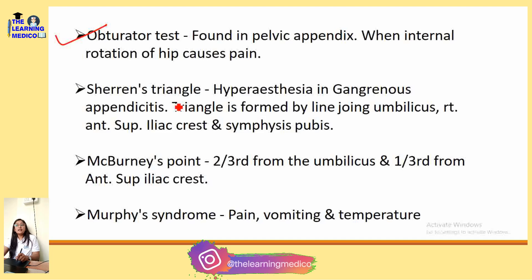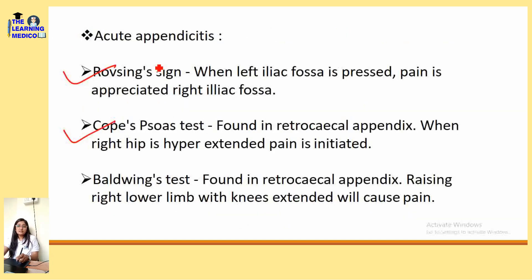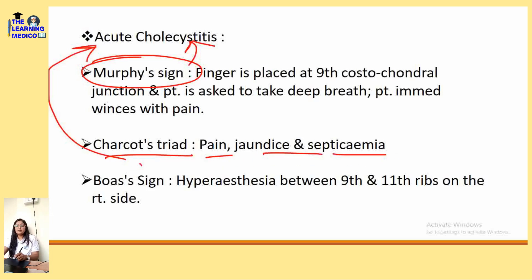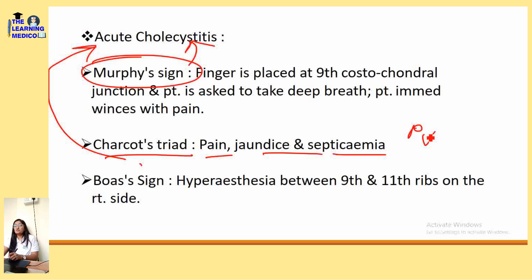McBurney's point is two-thirds from the umbilicus and one-third from the anterior superior iliac spine. Murphy's syndrome is pain, vomiting and temperature — seen in acute appendicitis. Murphy's sign comes in acute cholecystitis. Charcot's triad is pain, jaundice and septicemia — also in acute cholecystitis.